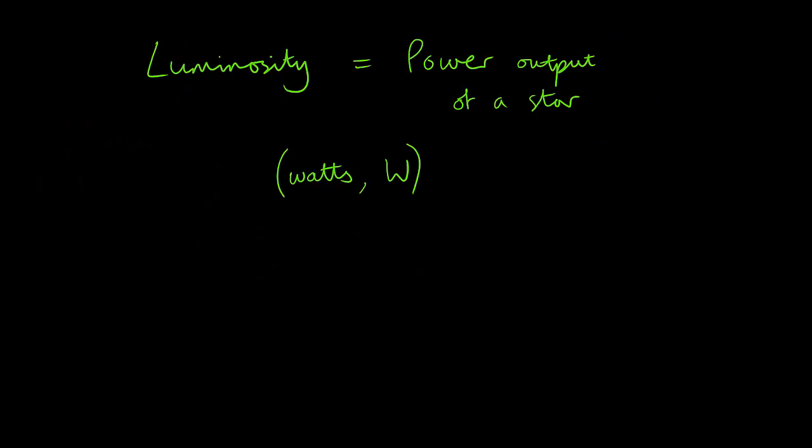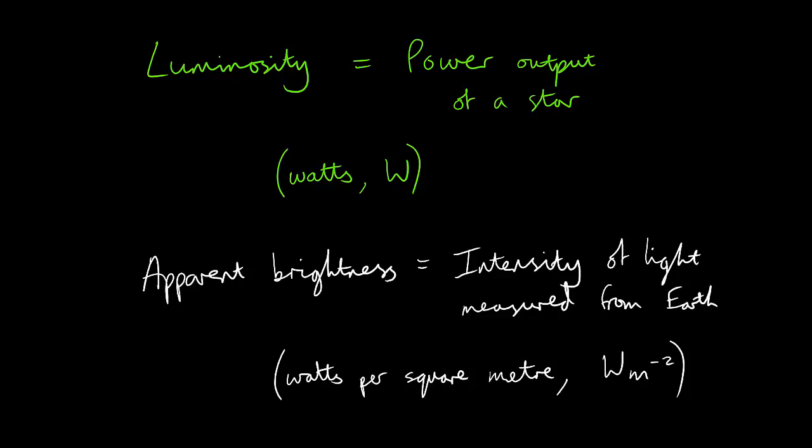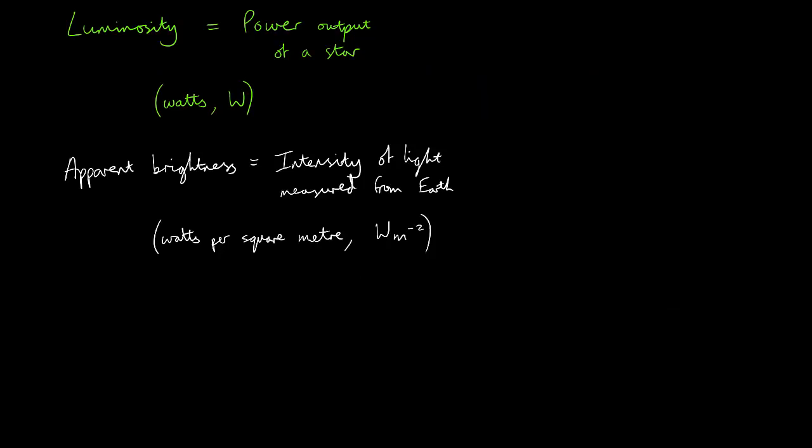The total power emitted by a star is known as its luminosity. This is measured in watts. The intensity of the light from the star as measured on Earth is known as its apparent brightness. And this is measured in watts per square metre. You may already be familiar with the equation relating intensity and power.